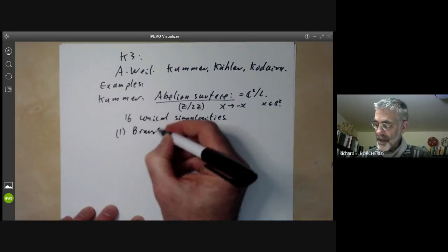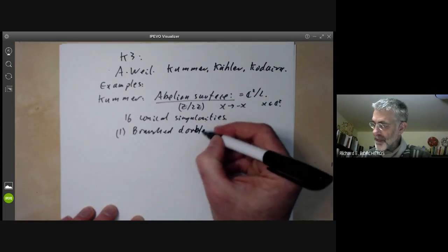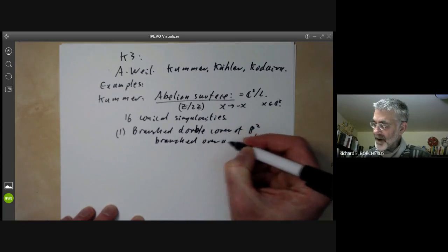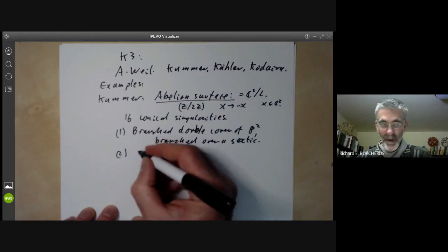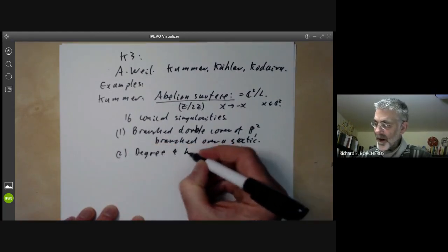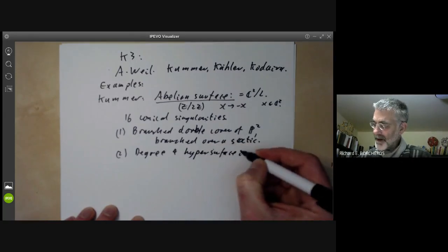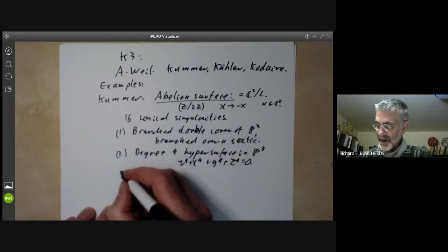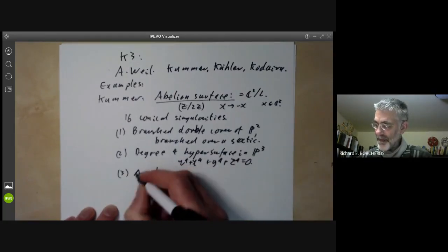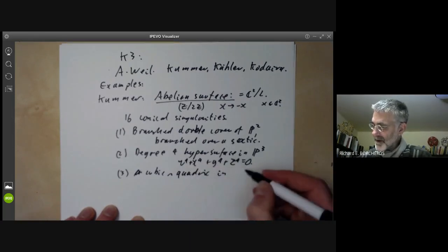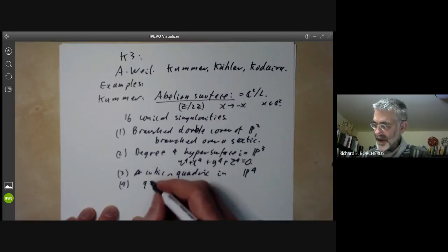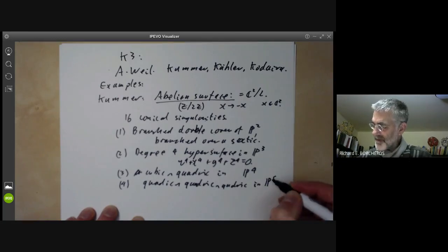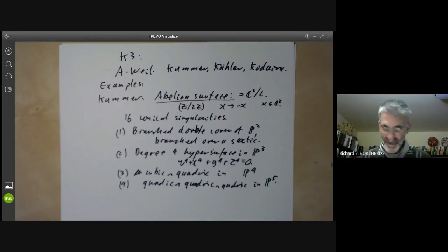There are quite a lot of other ways of constructing K3 surfaces. I'll just quickly mention four of them. First, we can take a branched double cover of the projective plane, branched over a degree six curve or sextic. Secondly, we can take a degree four hypersurface in ℙ³. For example, w⁴ + x⁴ + y⁴ + z⁴ = 0. Thirdly, we can take the intersection of a cubic and a quadric in ℙ⁴. Or fourthly, we could take the intersection of three quadrics in ℙ⁵.